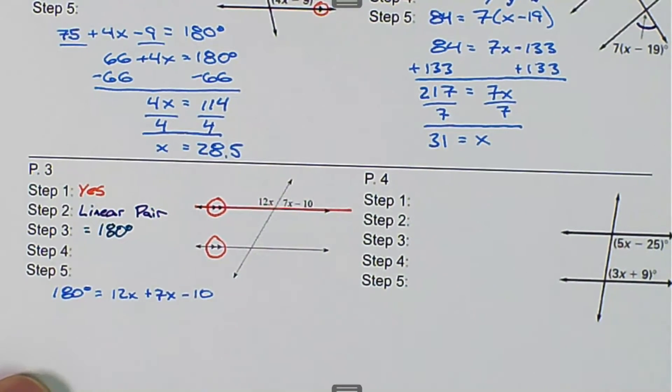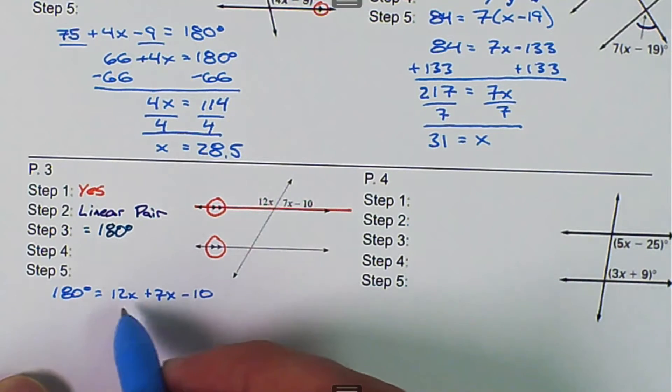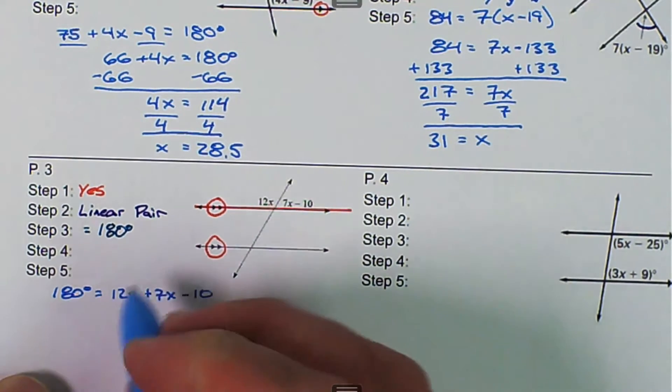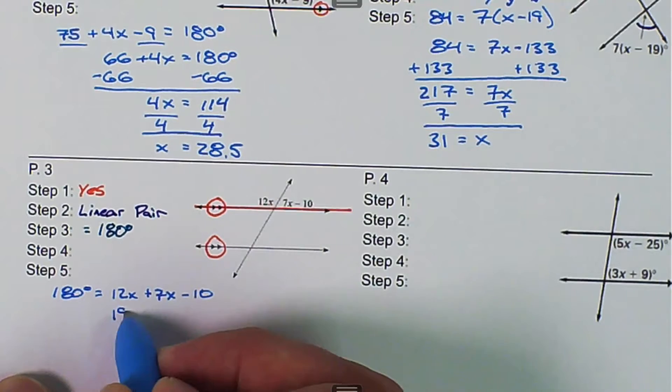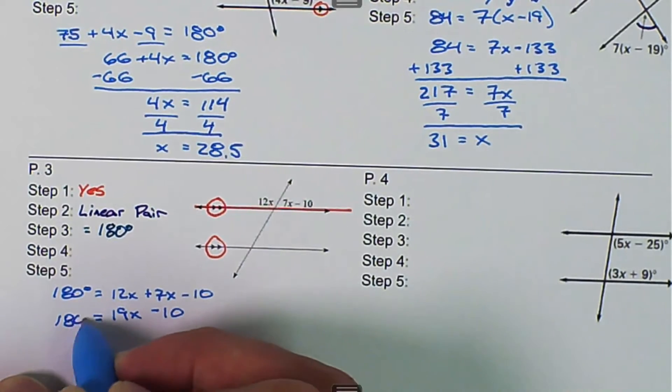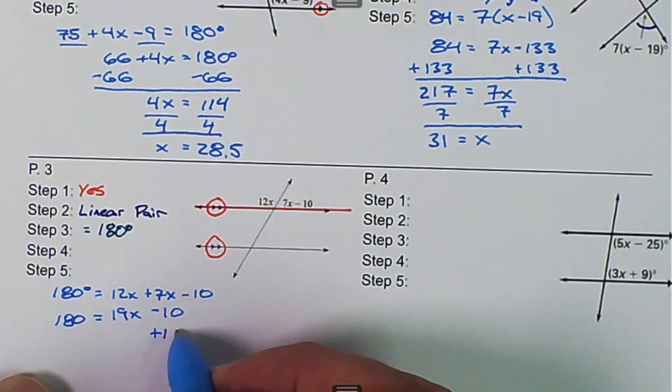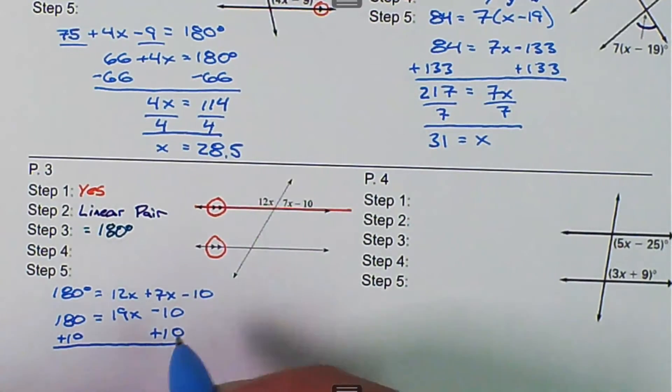And then we can use the substitution property of equality because 12x plus 7x is equal to 19x. Next, we can add 10 to both sides for the addition property of equality. And then we get 190 is equal to 19x.